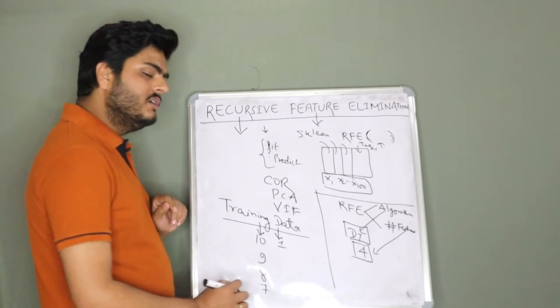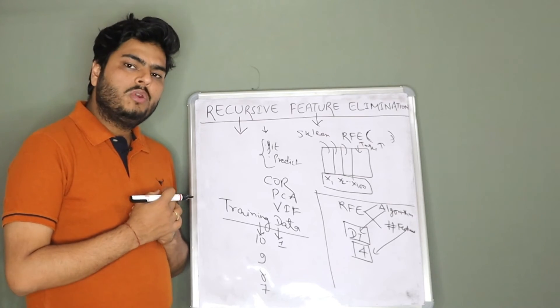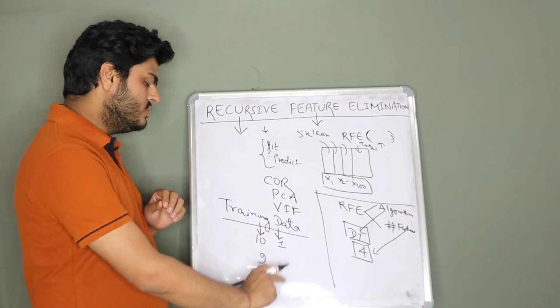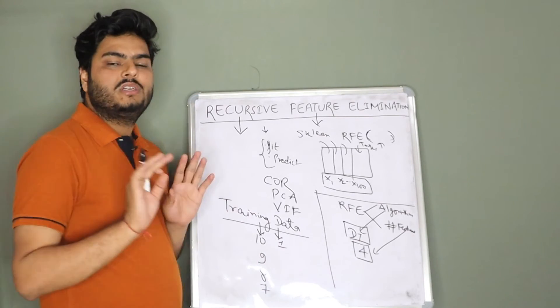Next iteration, model will run on 7 features. Feature importance will again be calculated and one least important feature will be taken out and so on and so forth till we reach up to 4 features.